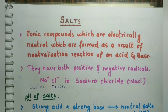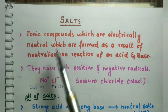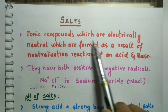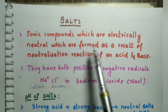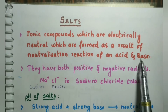In this video we will discuss the definition of salts, the pH of salts, common salt and the compounds produced using common salt as a raw material, and water of crystallization. Salts are ionic compounds which are electrically neutral, formed as a result of the neutralization reaction of an acid and a base.